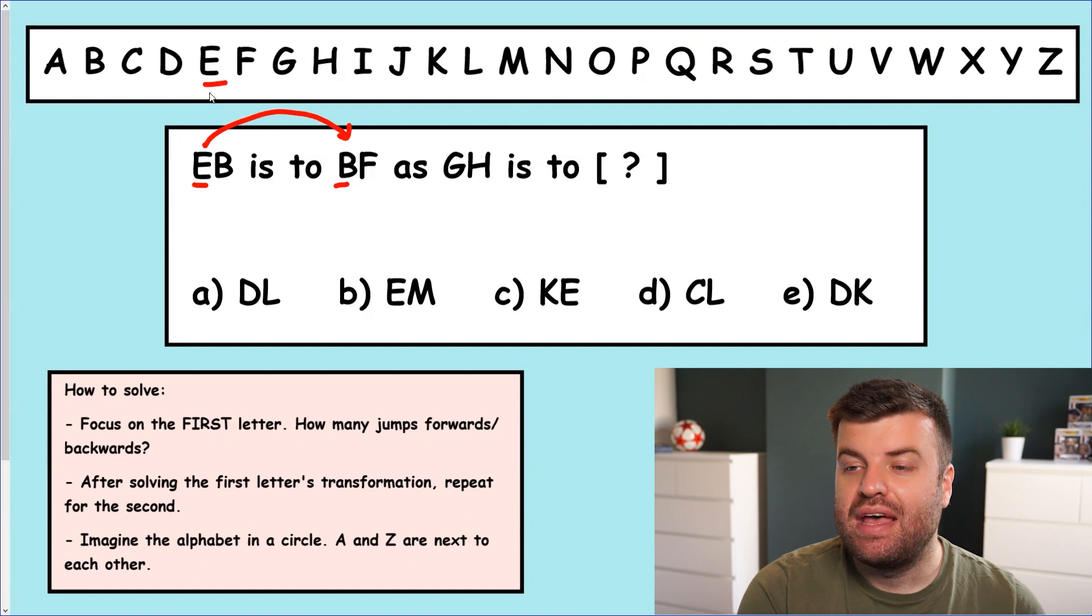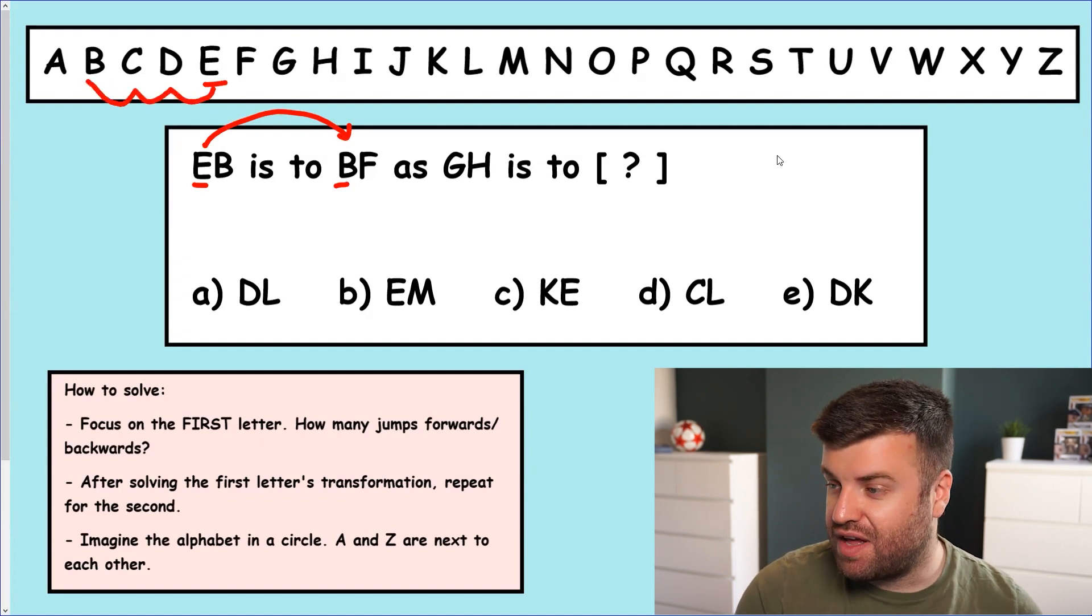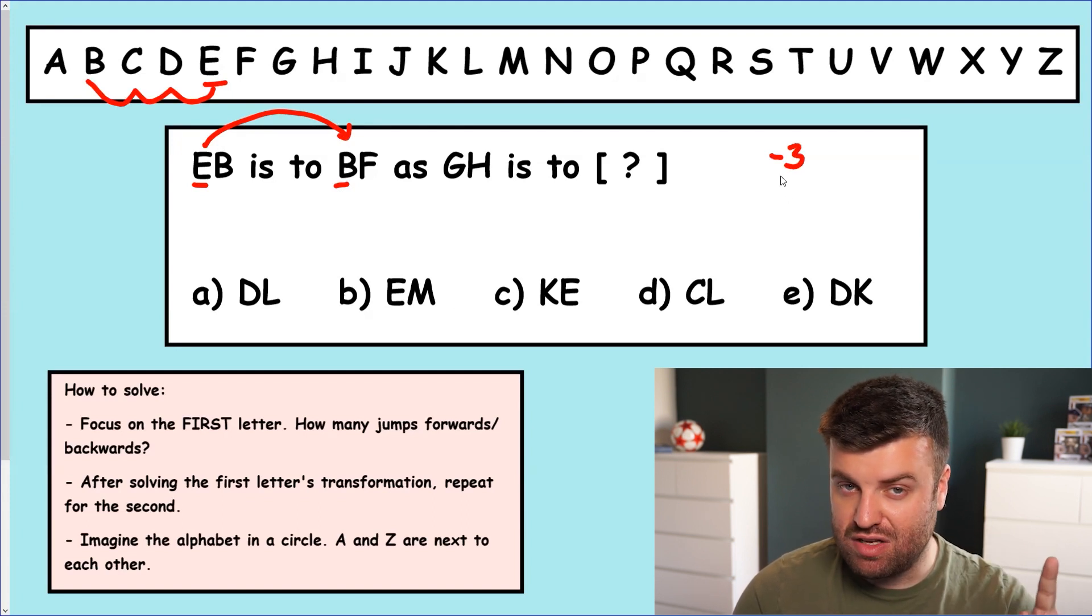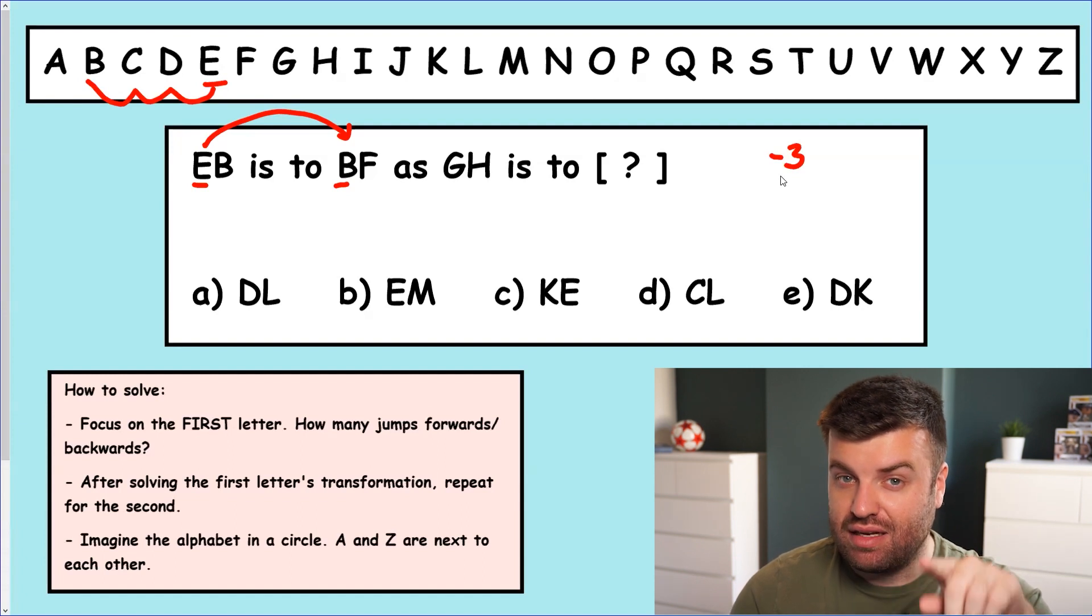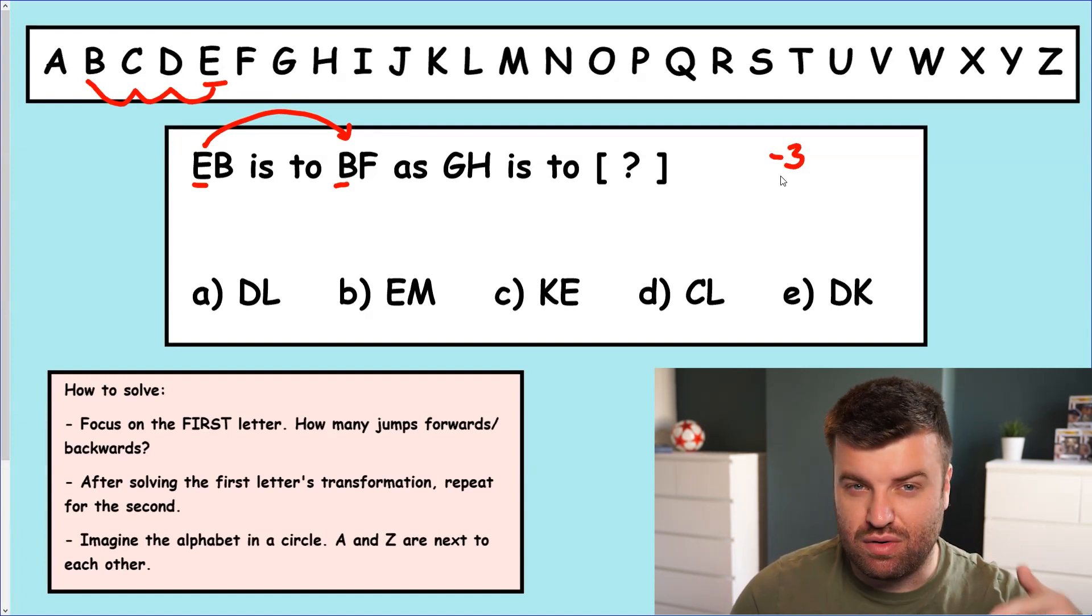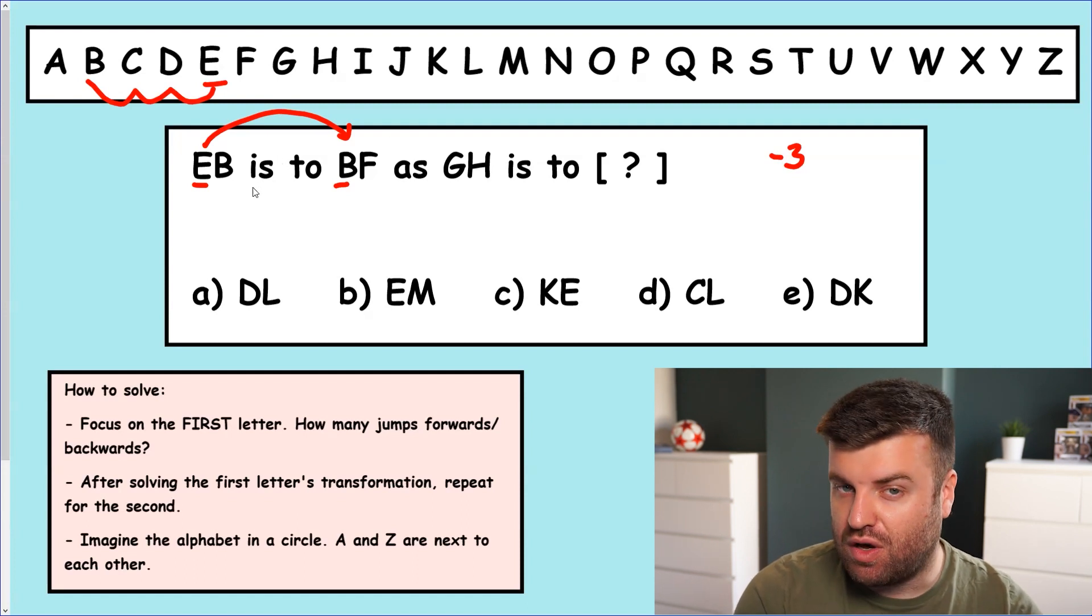Let's find out how on earth this E went to a B. So we go to our alphabet at the top and we count backwards. One, two, three. So the first letter had a minus three jump. So we've calculated that now. We know what the first letter does. We could jump straight in and calculate the first letter. I'm going to find the second code first instead.